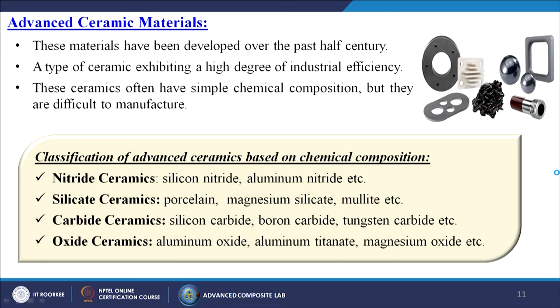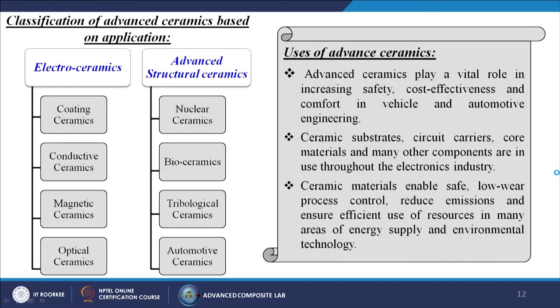Oxide ceramics include aluminium oxide, aluminium titanate, and magnesium oxide — sometimes used for enhancing the strength of materials. Based on applications, advanced ceramics are divided into electro-ceramics (coating ceramics, conducting ceramics, magnetic ceramics, and optical ceramics) and advanced structural ceramics (nuclear ceramics, bio-ceramics, tribological ceramics, and automotive ceramics). The nomenclature depends entirely on the intended application area.